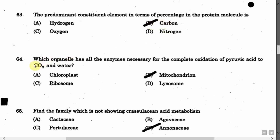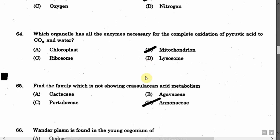The next question is: Which organelle has all the enzymes necessary for the complete oxidation of pyruvic acid to CO2 and water? Option A: Chloroplast. Option B: Mitochondrion. Option C: Ribosomes. Option D: Lysosomes. The correct answer is Option B, that is Mitochondria.